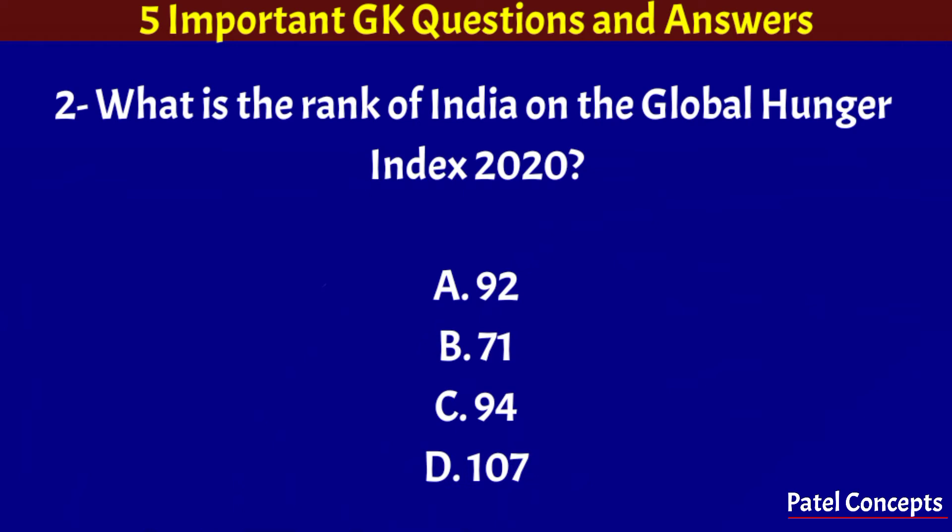What is the rank of India on the Global Hunger Index 2020? 94.